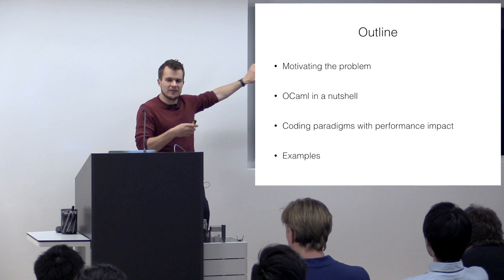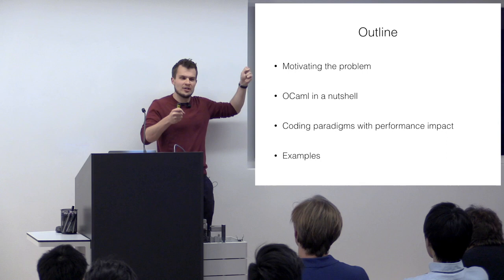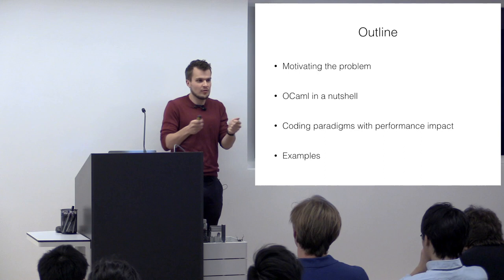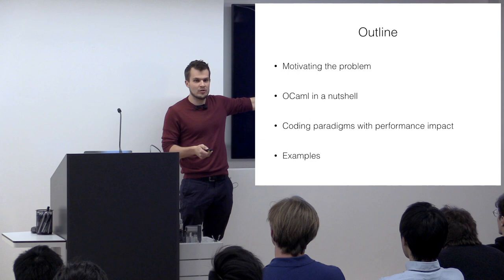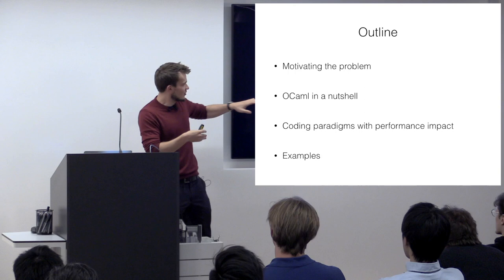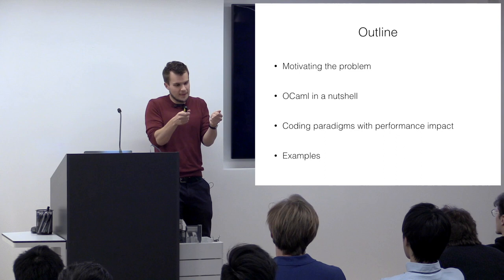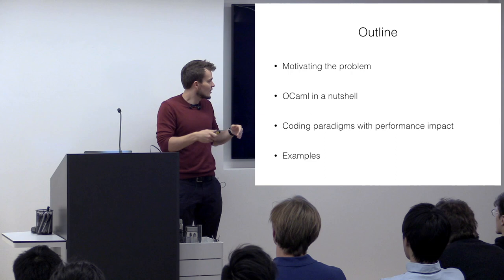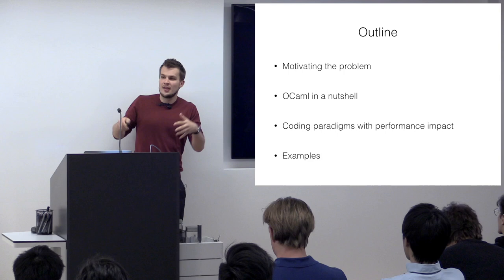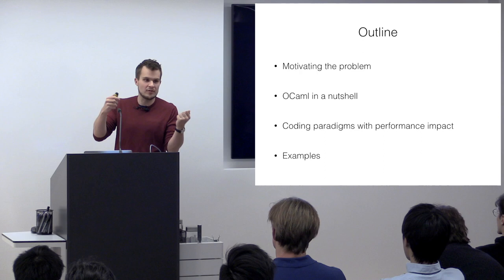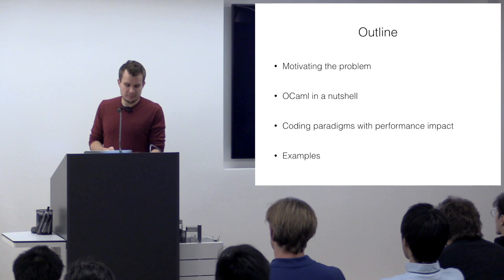To briefly outline the talk: I want to start with motivation for the problem — what are we trying to solve — and do some analysis to figure out what 'fast' means, how fast is fast enough, and what kind of latencies we're talking about. Then I'll briefly talk about OCaml and the choices it makes on the programming spectrum. Then I want to discuss some coding paradigms that have a performance impact and where you have to change how you think about them for high-performance, low-latency work. Finally, I want to talk about some slightly bigger example use cases.